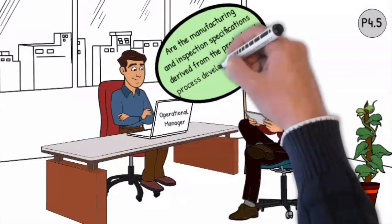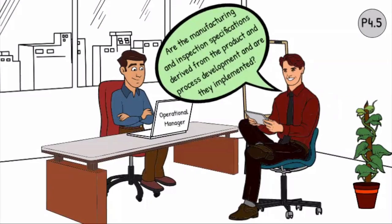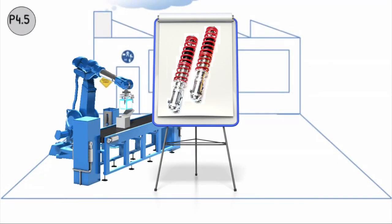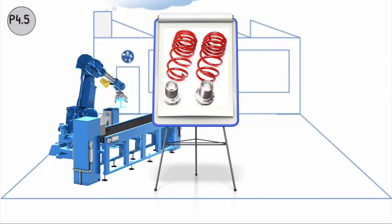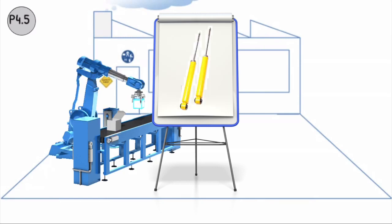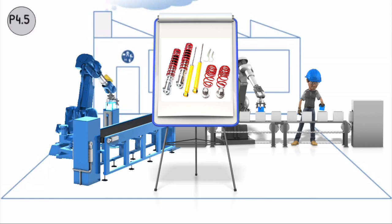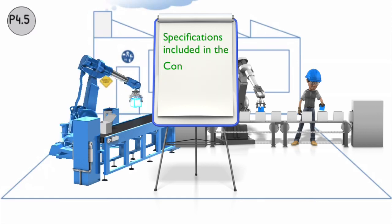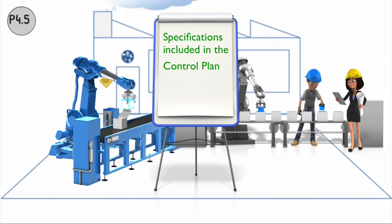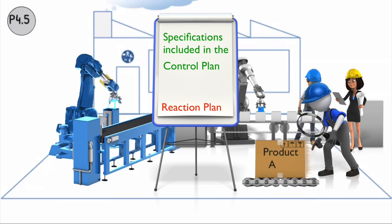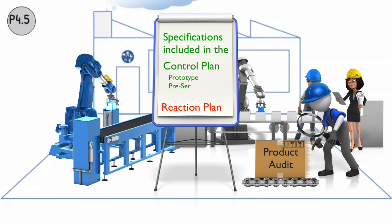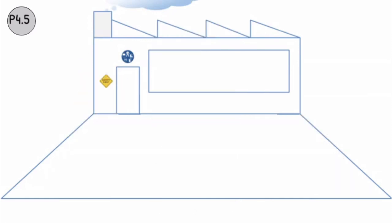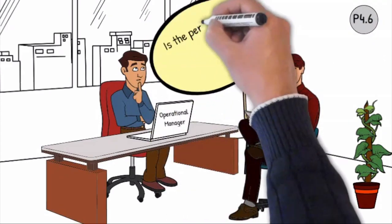Question P4.5: Are the manufacturing and inspection specifications derived from the product and process development and are they implemented? The manufacturing and inspection characteristics contain all characteristics from the product and process development, including special characteristics. These must take into account all the components, assemblies, sub-assemblies, parts, software, and materials including manufacturing processes that are part of the product. The specifications include information for product control, production process control methods, and response plans and corrective actions. Product audits, layout inspection, and functional verification plans are defined. The specifications must be available for all phases: prototype phase if required by the customer, pre-series, and series phase.